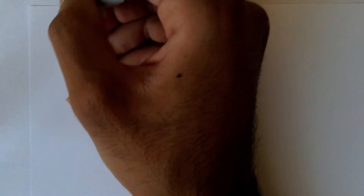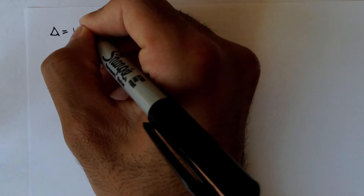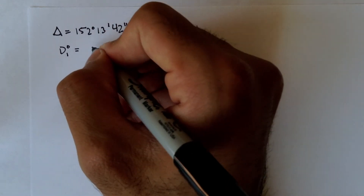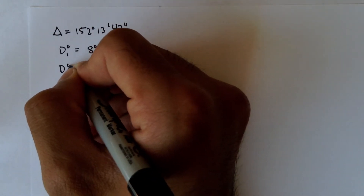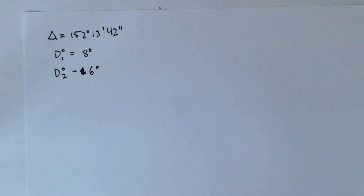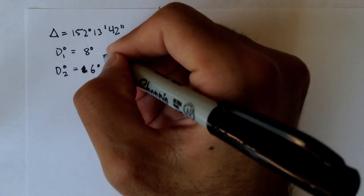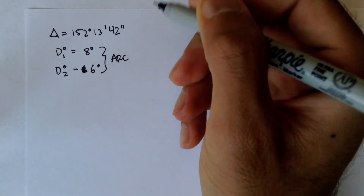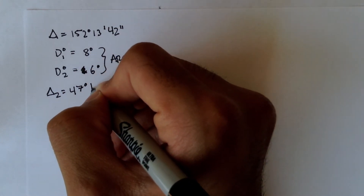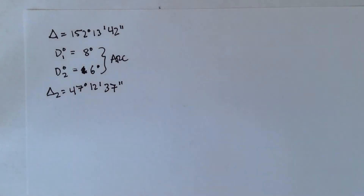In this example, we're given that the total interior angle is 152 degrees, 13 minutes, and 42 seconds. The degree of curvature for curve 1 is 8 degrees, and the degree of curvature for curve 2 is 6 degrees. The problem doesn't specify arc or chord definition, so when it doesn't say, we always assume definition by arc. We're also given that delta 2 is equal to 47 degrees, 12 minutes, 37 seconds.